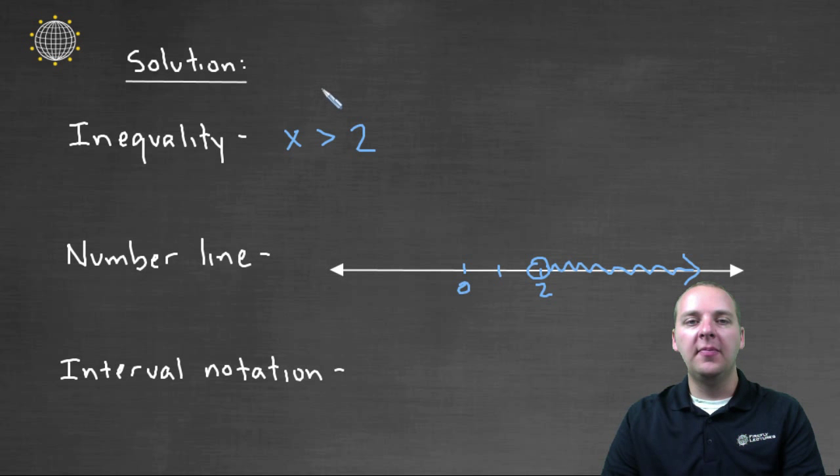Well if you look back at your inequality, these are all the x's strictly, this is a strict inequality, strictly greater than two. So two point one is fine, two point two is fine, two point oh oh oh oh five is fine.